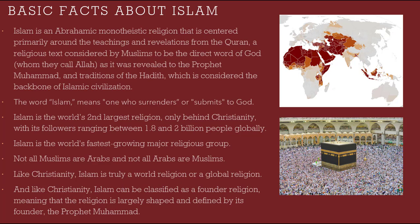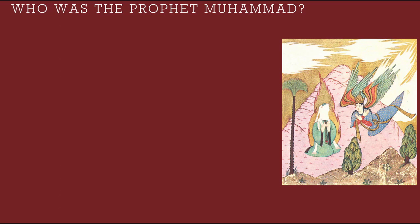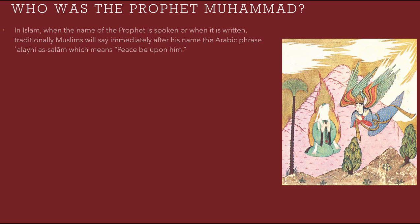So now we've laid the ground level for the basics of Islam. Since Islam is a founder religion, we need to talk about who was the Prophet Muhammad. Before we can talk about the Prophet, it is important to mention some characteristics about his veneration within the culture and religion of Islam. In Islam, when the name of the Prophet is spoken or written, traditionally Muslims will immediately say an Arabic phrase — Al-Aliya As-Salaam — which means peace be upon him.